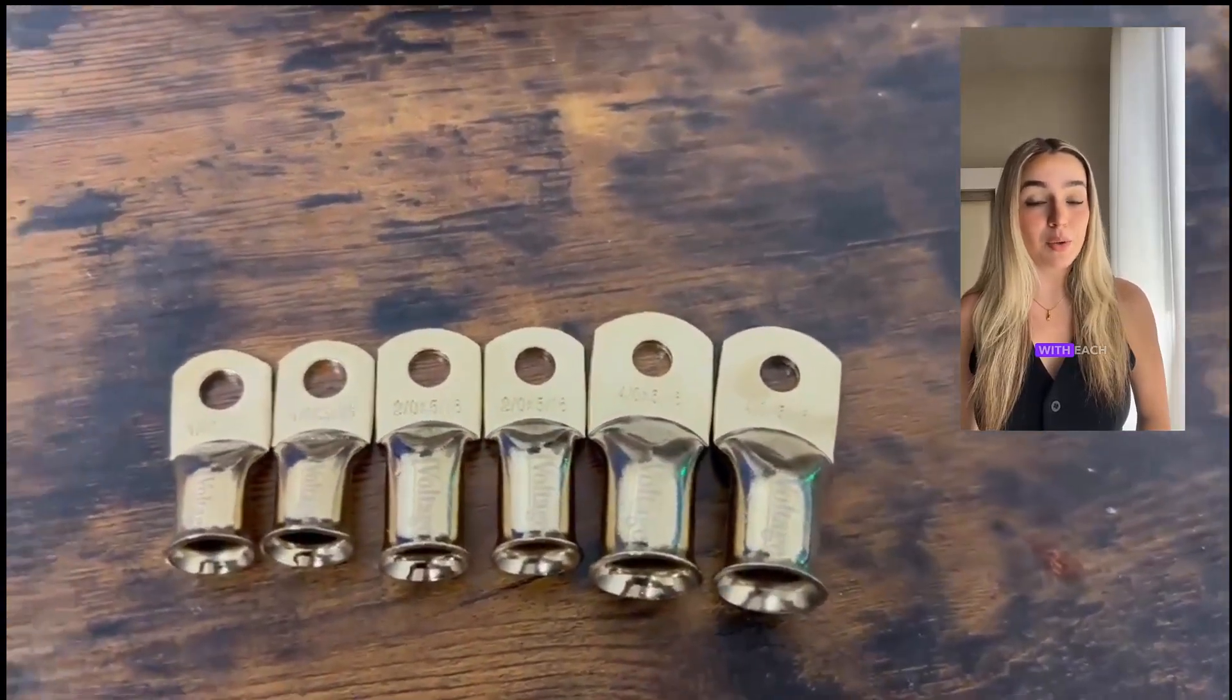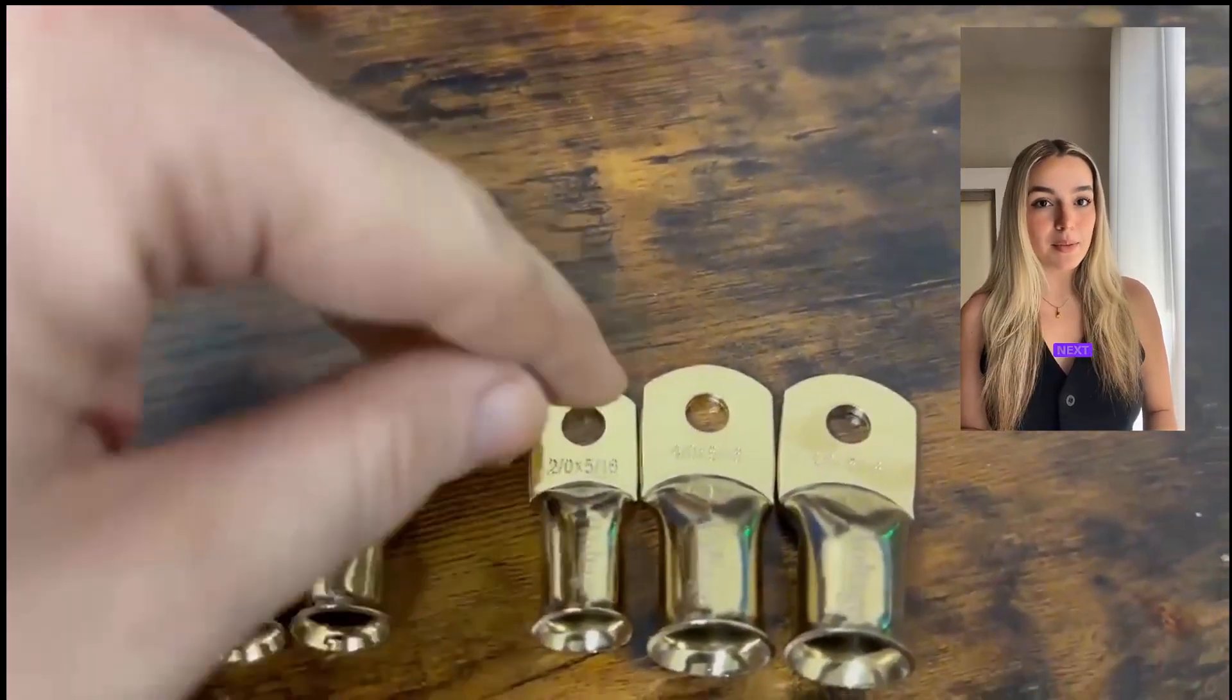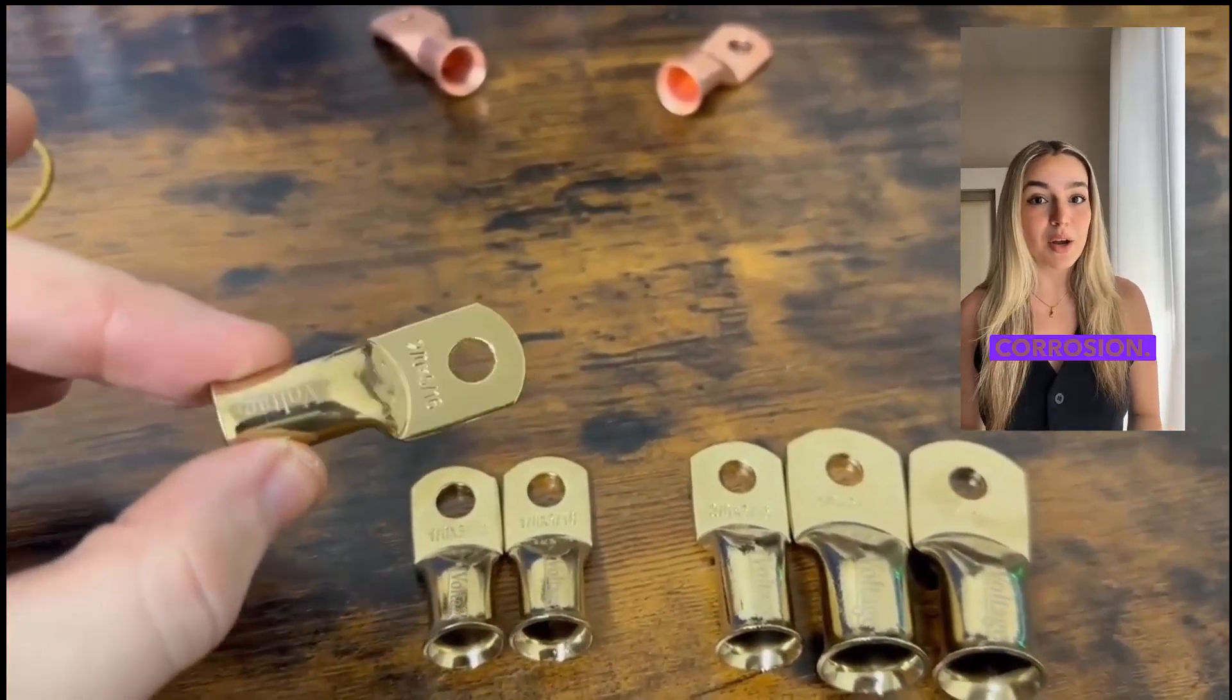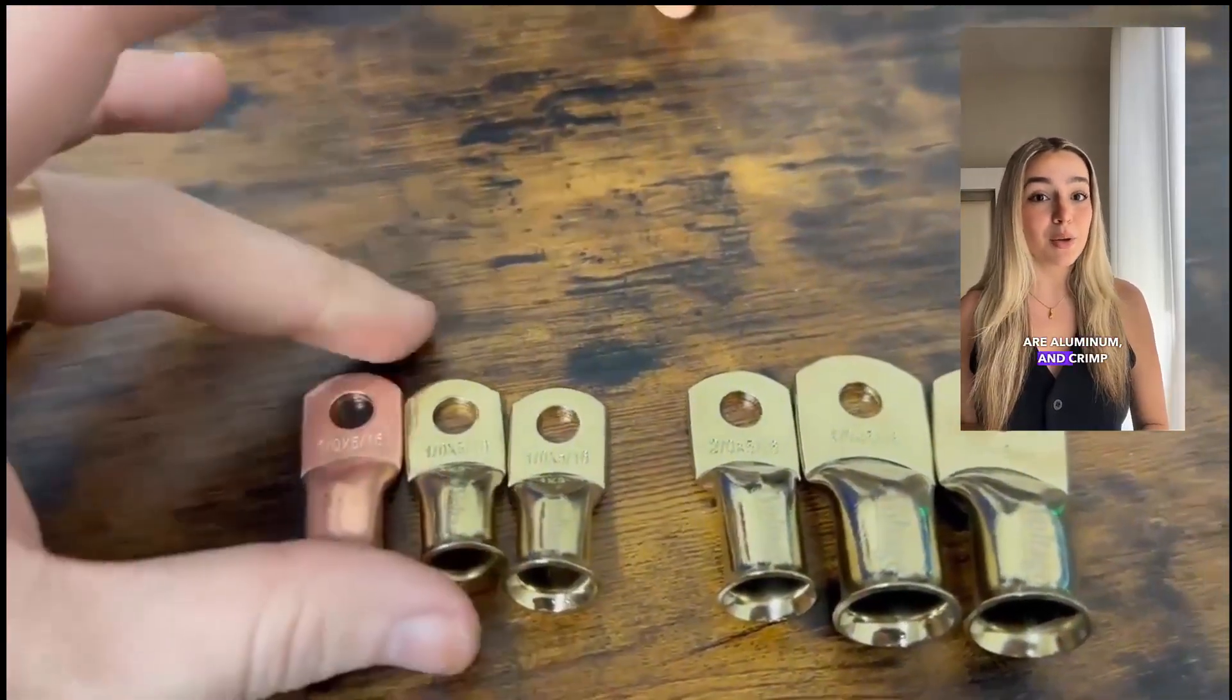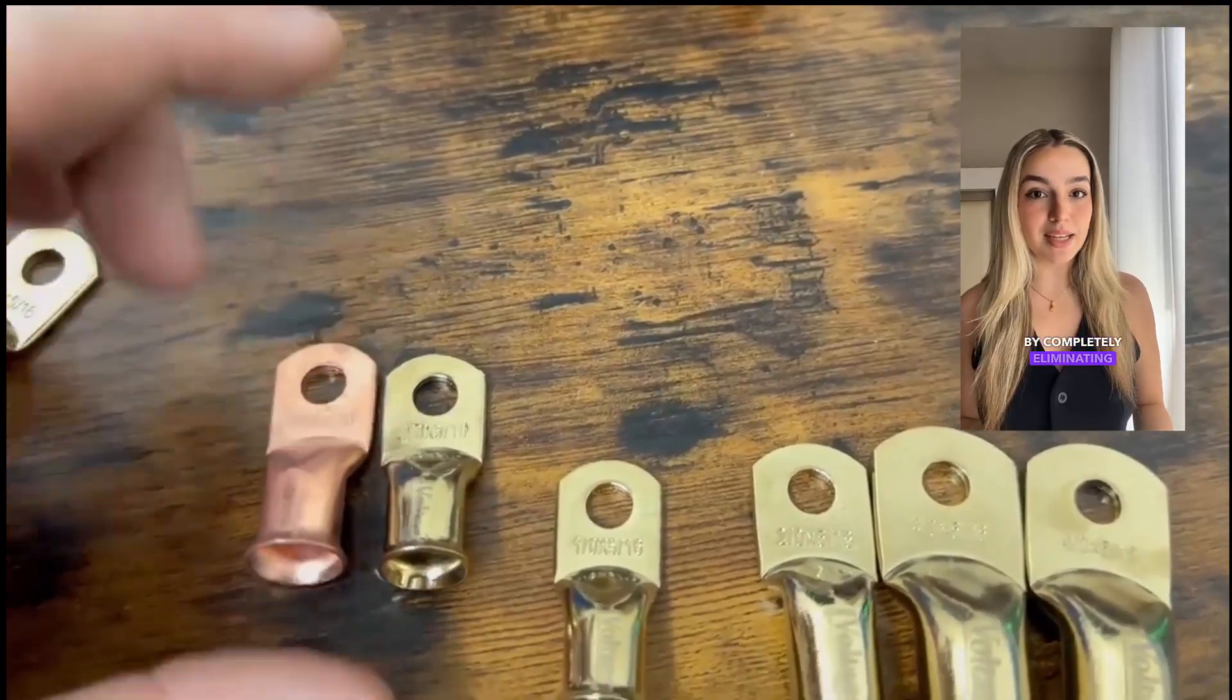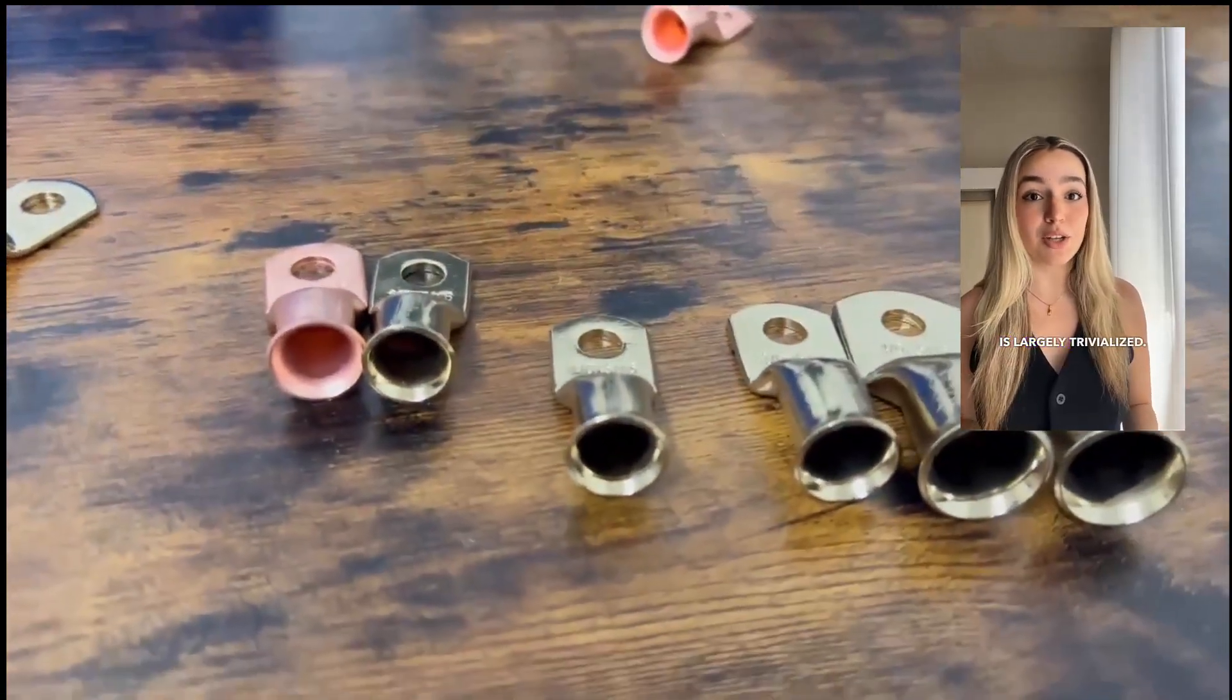Next benefit: highly reduced corrosion. Aluminum and copper connections are generally not recommended due to galvanic corrosion. Problem is, a lot of distribution blocks as well as battery terminals are aluminum, and crimp lugs are copper. This is why you will oftentimes see tinned copper lugs to help prevent this. By completely eliminating metal-to-metal contact with our lugs, galvanic corrosion is largely trivialized.